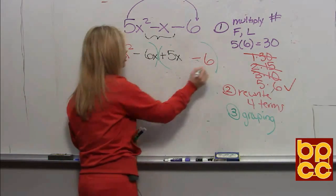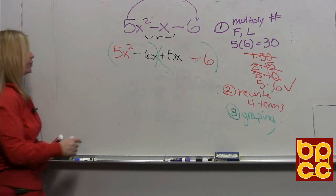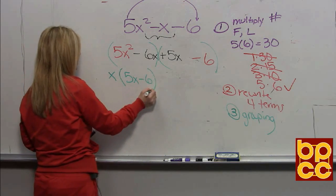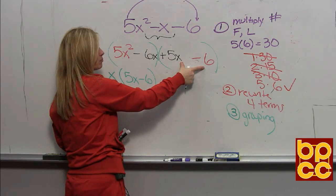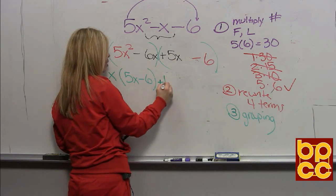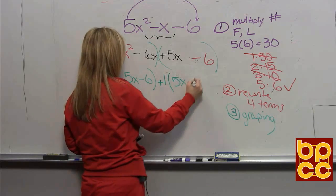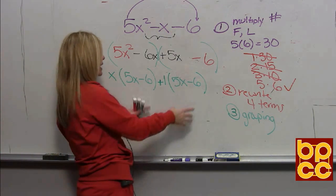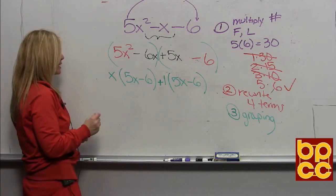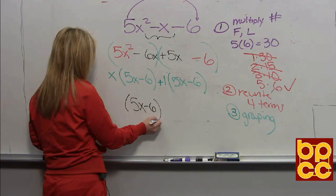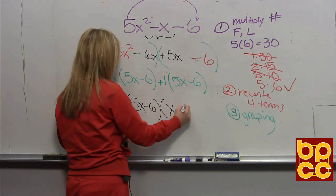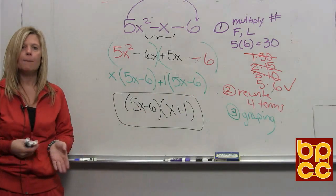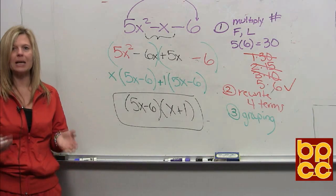Once you have those four terms, now you can use grouping — where you group the first two terms and the last two terms and pull out what they each have in common. These two terms each have an x in common, and then you would be left with five x minus six. These two terms don't have anything in common, so the only thing we can divide them by is positive one, and it would still say five x minus six. When we did grouping in the previous module, to do grouping correctly these parentheses have to be identical — and they are. So you'd write that parentheses down: five x minus six, and then the GCFs go in the other parentheses. That's the same result as factoring by FOIL thinking backwards.